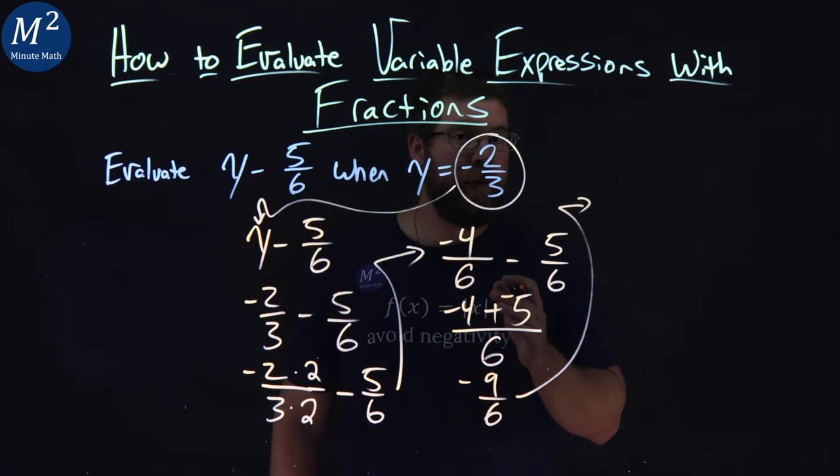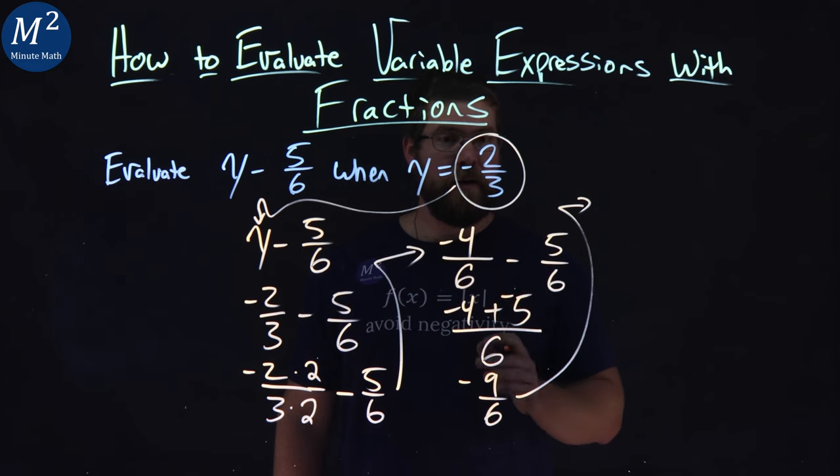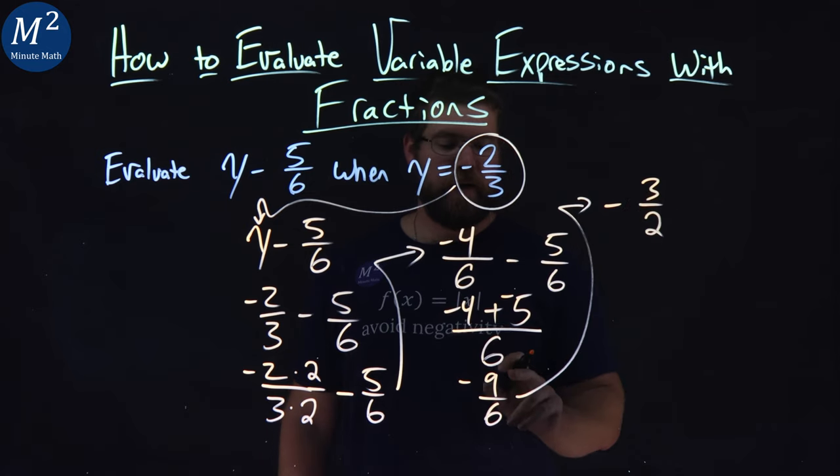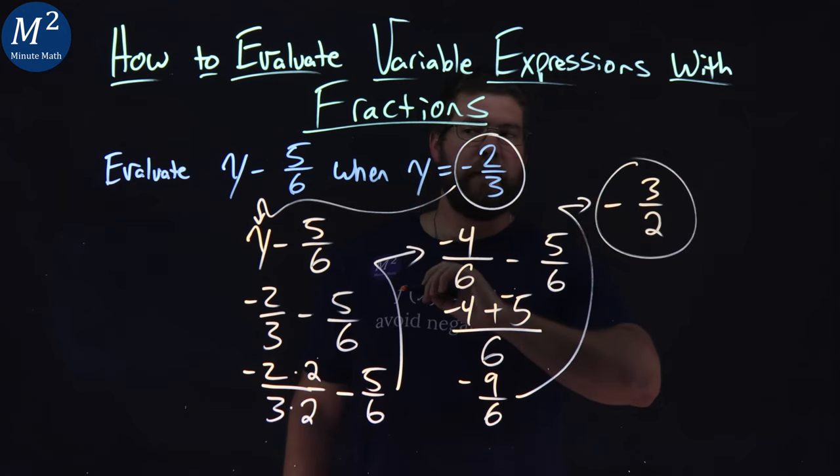Both are divisible by 3. 9 divided by 3 is 3, and 6 divided by 3 is 2. So we have negative 3 over 2. We simplified 9 sixths, and there we got it.